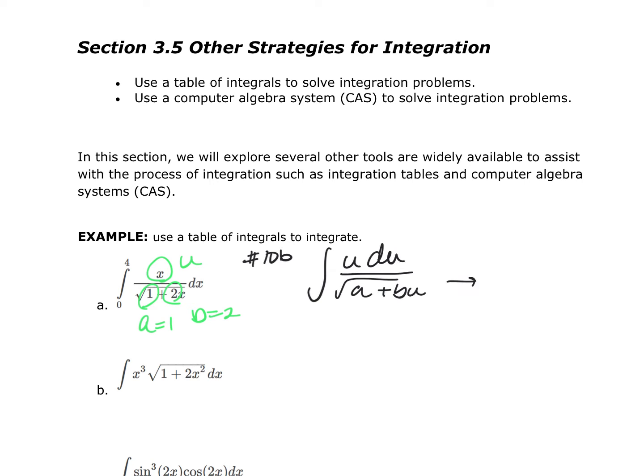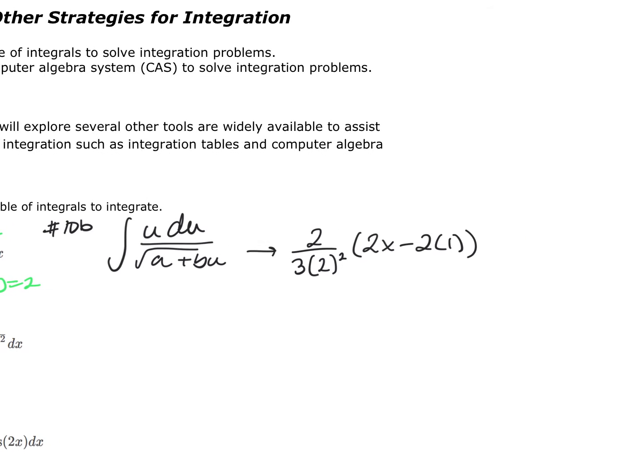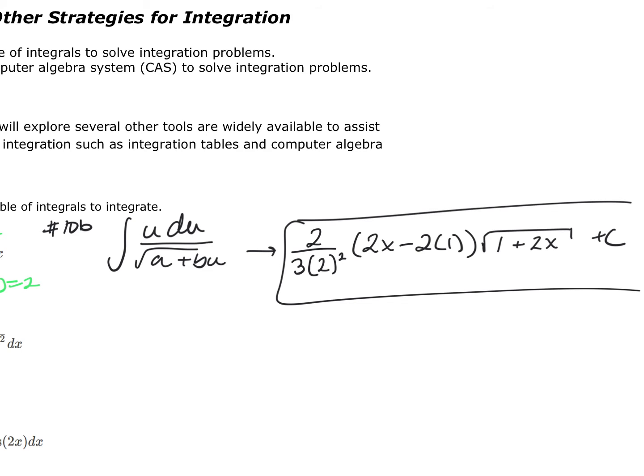Now, using the table of integrations, this is going to be equal to 2 over 3b squared, which my b was 2. So it's 2 over 3 times 2 squared, multiplied by my b, which is 2u, which is x, minus 2 multiplied by a. My a happened to be 1, multiplied by the square root of a, which mine was 1, plus 2x, because it is b times u, plus c. And that's it. Just going out and finding the appropriate one in the integration tables.